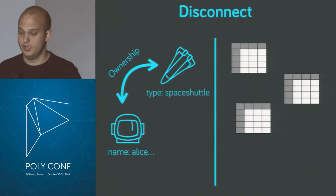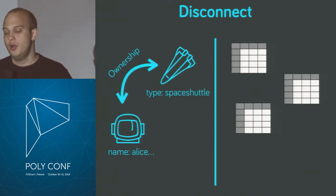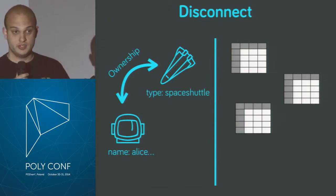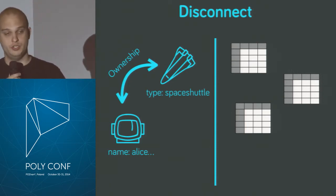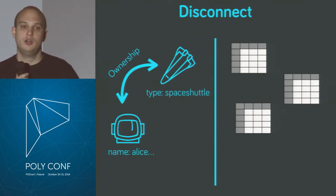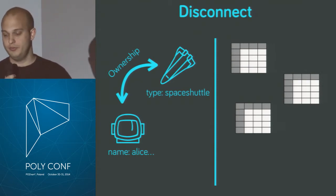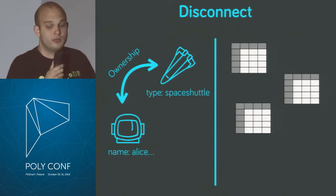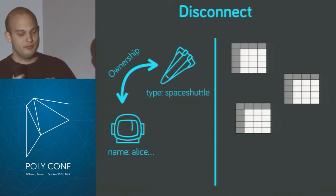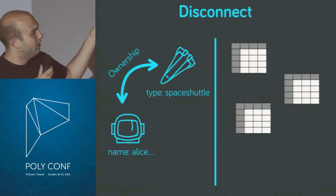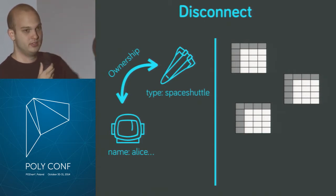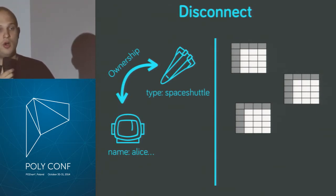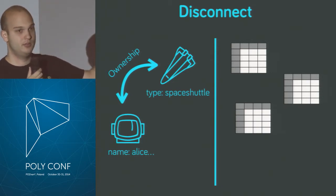If we are solving a problem of astronauts owning spaceships, a domain expert might draw a picture: this is Alice, this is the spaceship, and there's an ownership relationship between them — they draw an arrow. Then a clever programmer would say: okay, we need these three tables. The person that described the problem will be quite puzzled, because how did you get from that drawing to those tables? All the knowledge about joins and SQL needs to be there to translate from one side to the other.